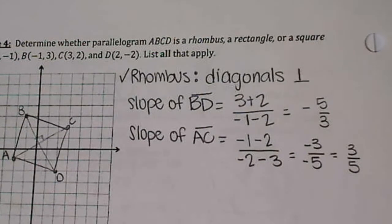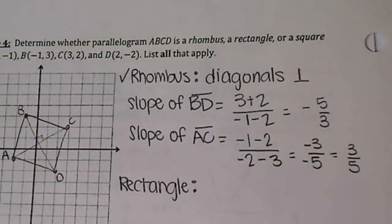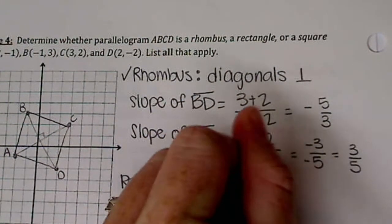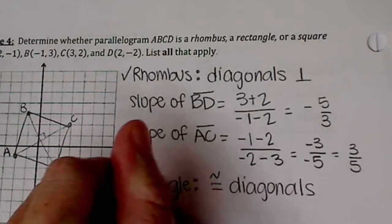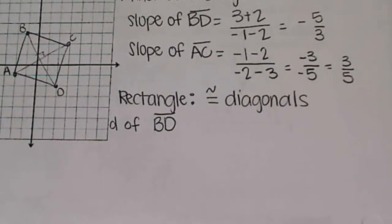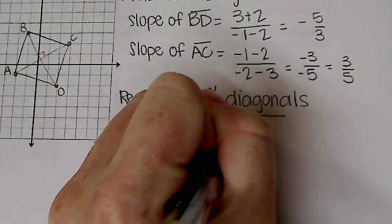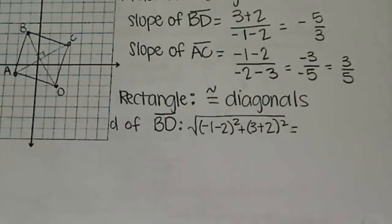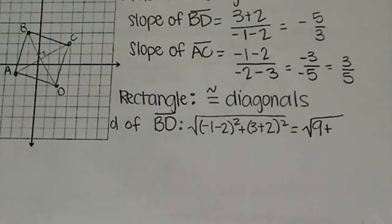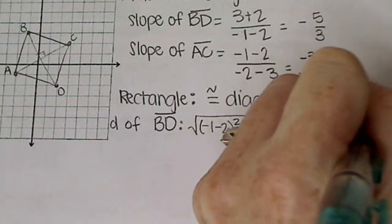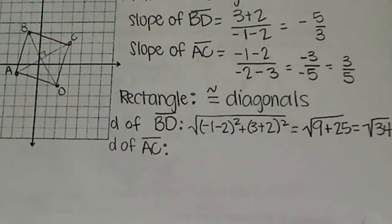We need to see if it's a rectangle now. In order for this to be a rectangle, the diagonals have to be congruent, which means we're going to use the distance formula of our diagonals. So the distance of BD is what I'm going to find first. You can use the distance formula in the back of your book or on your formula chart. Plug it in. Negative one minus two is negative three square it. That's nine. Three plus two is five squared twenty-five. That's the square root of thirty-four.